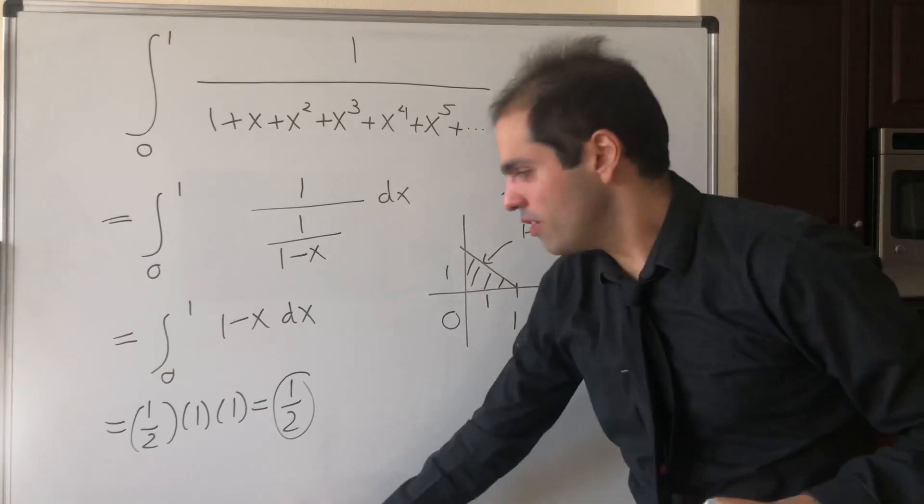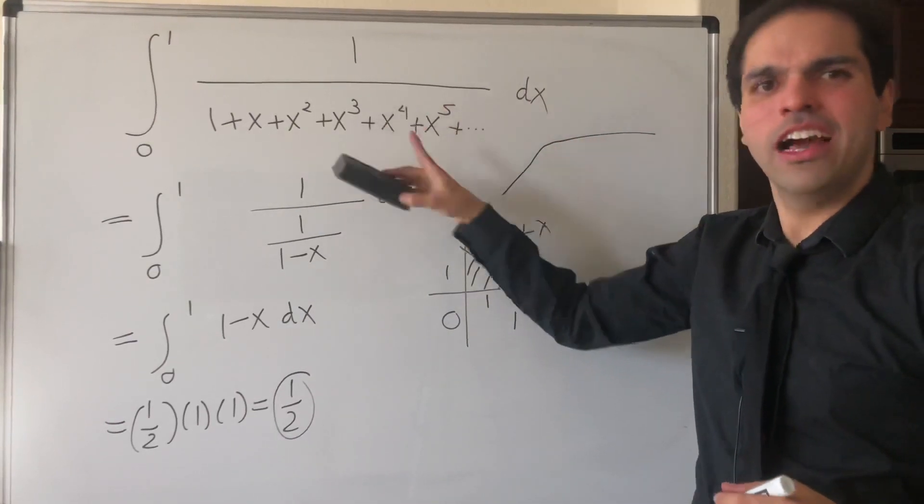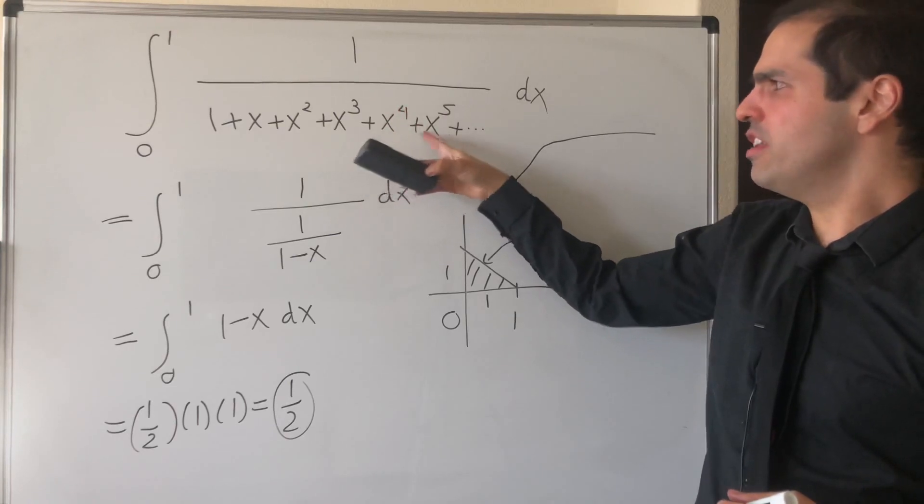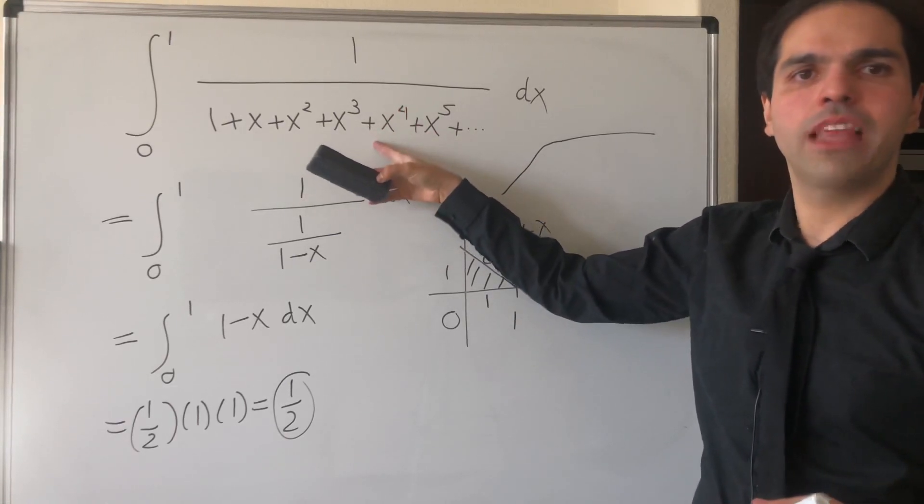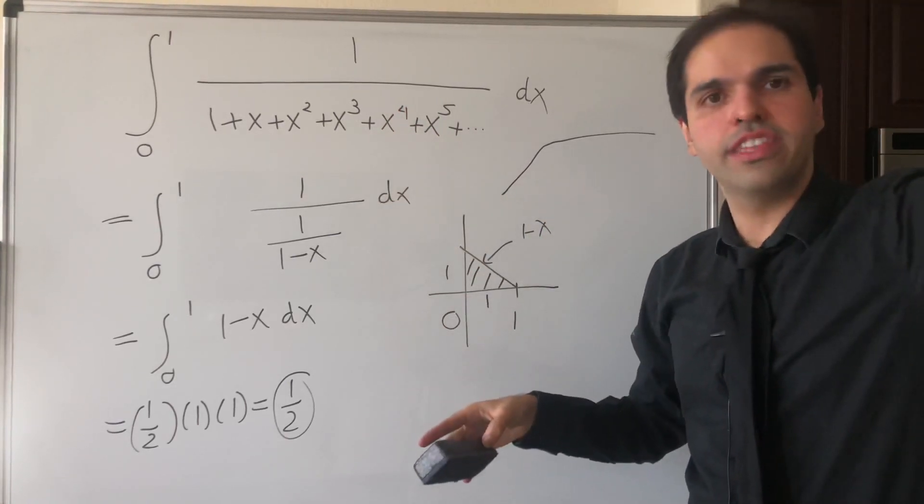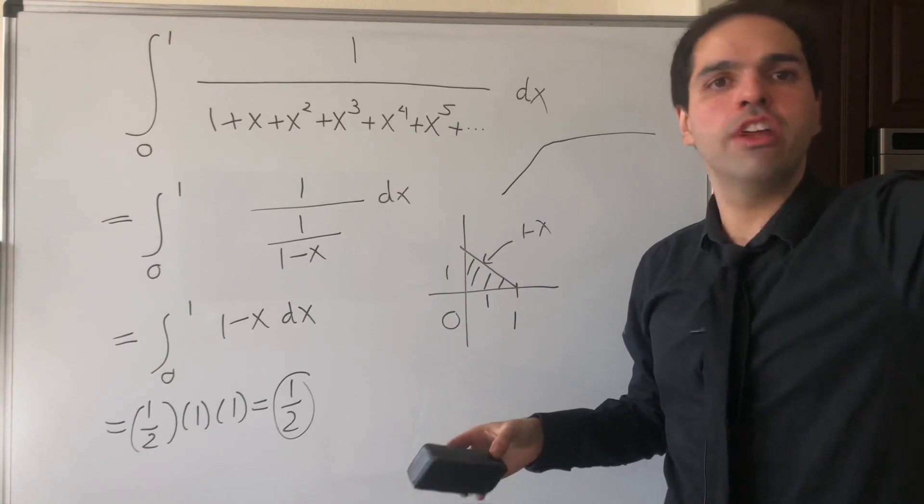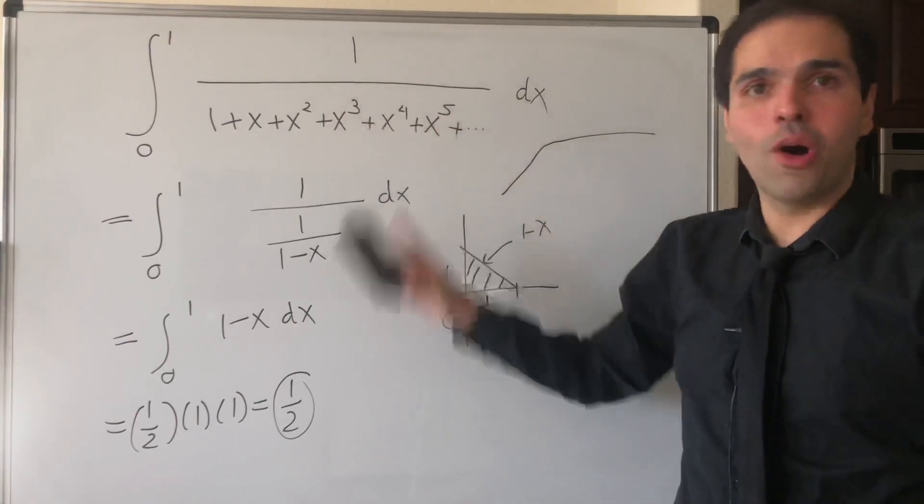And if x is less than minus 1, I might be wrong, but even if this series on the bottom diverges, I think you're just taking 1 over bigger and bigger number. So I think also,